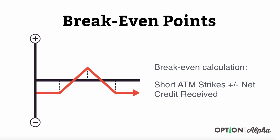Breakeven points are very easy to calculate in this type of trade. We're going to take the short at-the-money strikes — whichever strike prices we sold on both sides — and add or subtract the net credit received depending on which direction you're going. It has two breakeven points. To calculate the lower breakeven point, take the at-the-money short strike and subtract the net credit. To calculate the higher breakeven point, take the at-the-money short strike and add the net credit that you received.